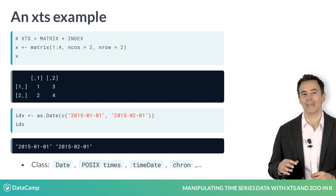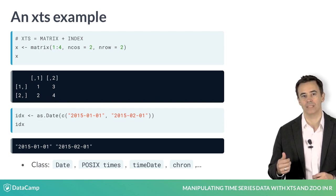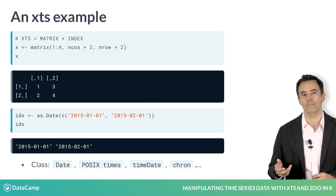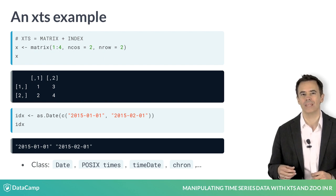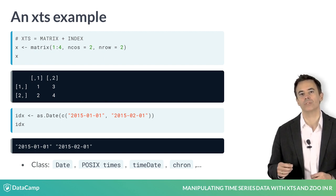not a string or number that looks like time. XTS lets you use nearly any time class — be it of class date, POSIX times, timeDate, chron, and more — but they need to be time-based. Here we're using R's date objects.